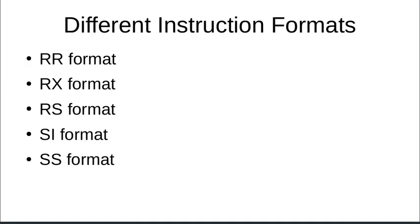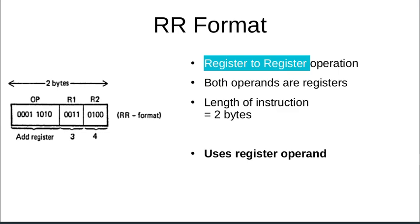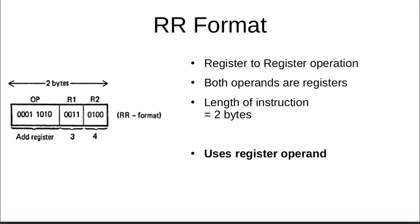The different instruction formats are: RR, RX, RS, SI, and SS. The RR format is the register-to-register operation. As seen in the diagram, both operands R1 and R2 are registers, and the length of the instruction is 2 bytes. For example, the ADD operation adds the contents of register R1 with the contents of register R2.